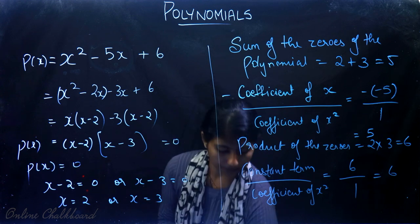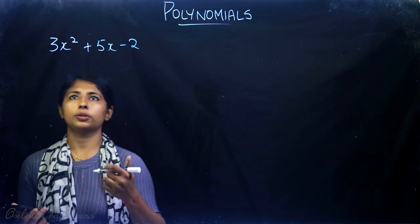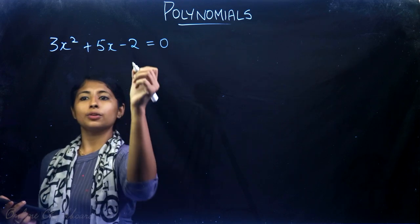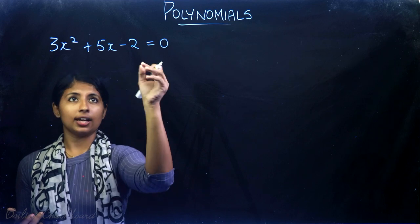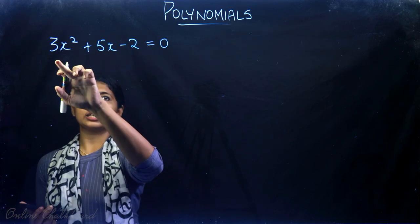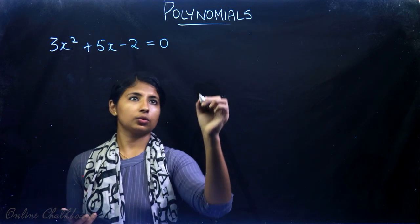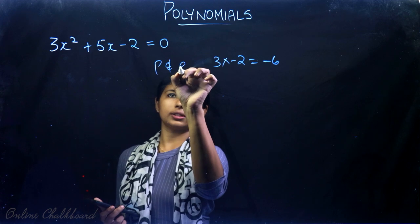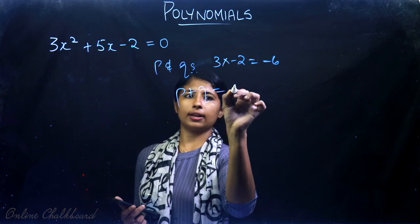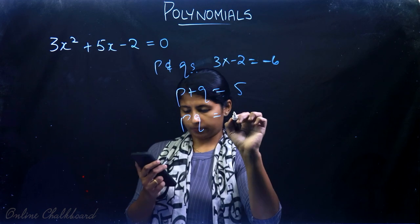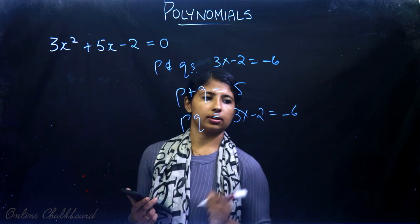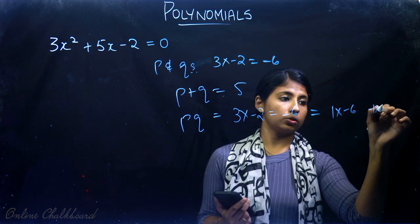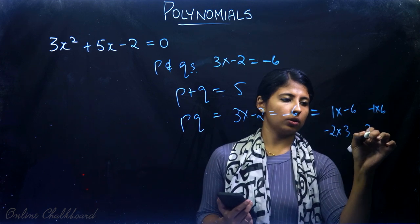To make this more clear, let's do one more example. We need to find the zeros of the polynomial 3x² + 5x - 2 using the split-the-middle-term method. We need two numbers such that their sum is 5 and product is 3 × (-2) = -6. The factor pairs of -6 are: 1×(-6), (-1)×6, (-2)×3, and 3×(-2).